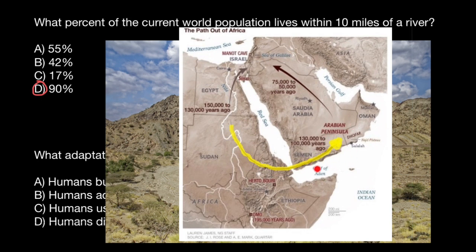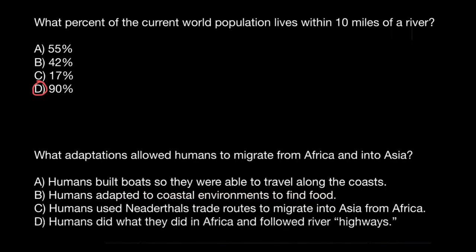Of course, we cannot find anything under the water. Now let's check the second question: what adaptations allowed humans to migrate from Africa into Asia? Answer A — humans built boats so they were able to travel along the coasts — is probably not correct, as we don't know anything about them being able to travel by boat. Answer B — humans adapted to coastal environments to find food — is probably also correct, but we don't see any proof of it and no evidence is left, as I already explained.